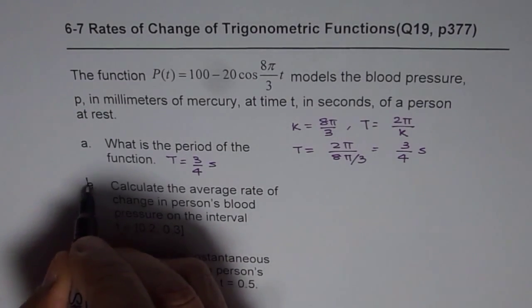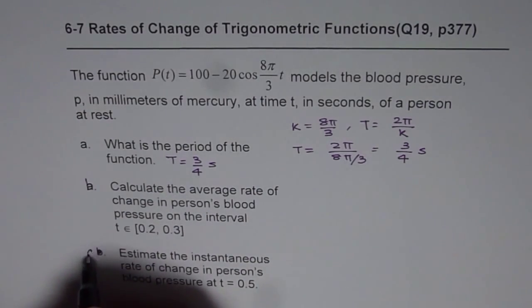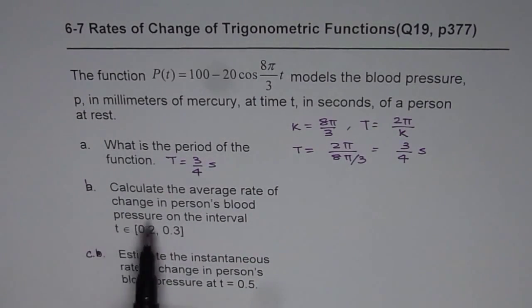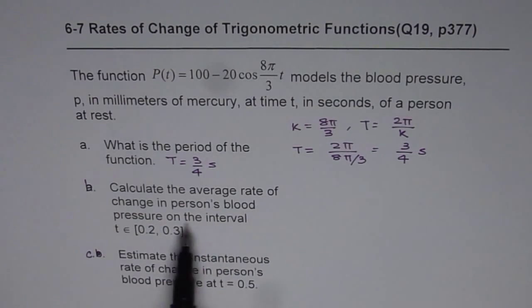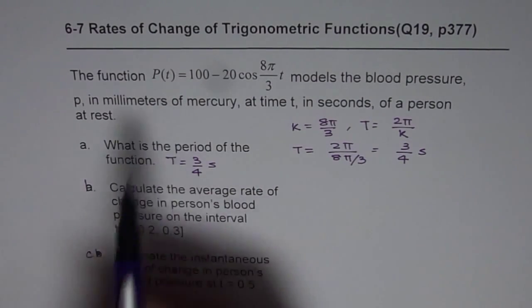Now this is part B and then we have part C here. Part B is calculate the average rate of change in person's blood pressure on the interval 0.2 to 0.3. So I will not do the calculation but let's write it down.